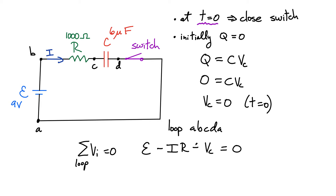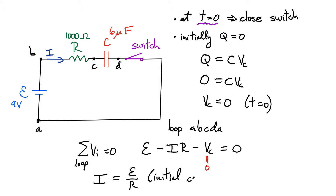At time zero, the capacitor voltage V_C equals zero, so that term drops out and the loop rule becomes very straightforward. That means my initial current I₀ is simply the EMF divided by the resistance — it behaves as though the capacitor is not even there. The current is going to get smaller as a function of time, but initially, right when I close the switch, I get quite a lot of current. I'll call this I₀, just to remind myself it's the initial current.